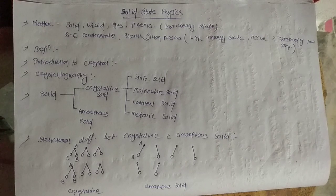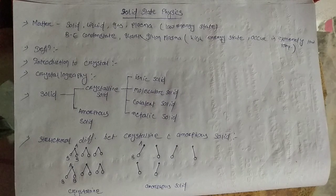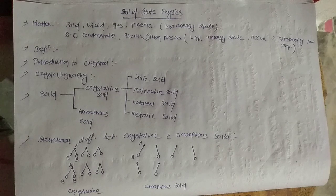Polar molecular solids contain polar molecules such as HCl and SO2. In this case, there is a strong dipole-dipole interaction, so they possess higher melting and boiling points. Hydrogen-bonded molecular solids contain particles which are bonded with hydrogen bonds, for example water, NH3, and hydrogen fluoride. These solids have high melting and boiling points.